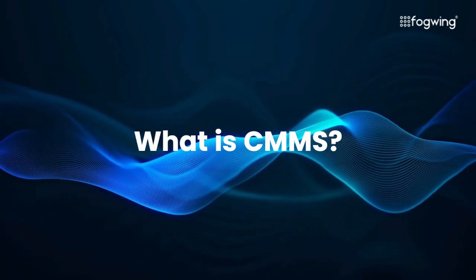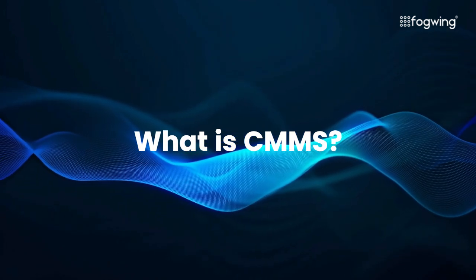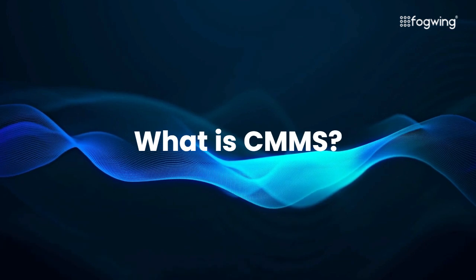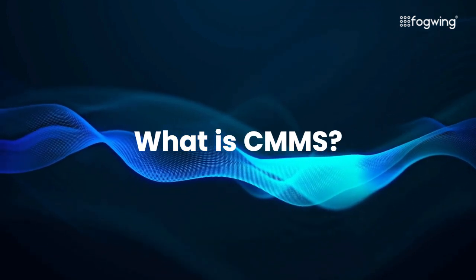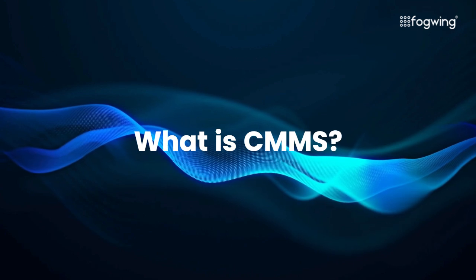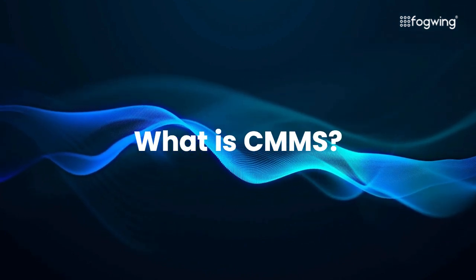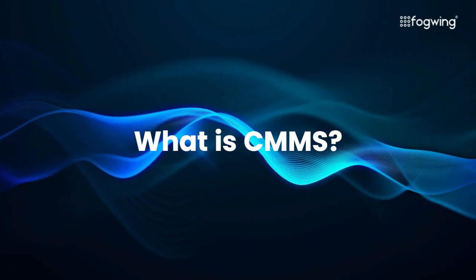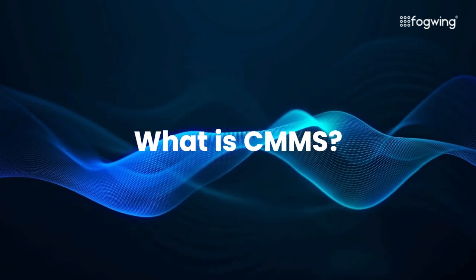What is CMMS? CMMS stands for Computerized Maintenance Management System. Its focus is on managing maintenance activities, such as preventive maintenance schedules, work orders, and inventory management. CMMS software keeps track of equipment, monitors its condition, and schedules repairs to keep things running smoothly.